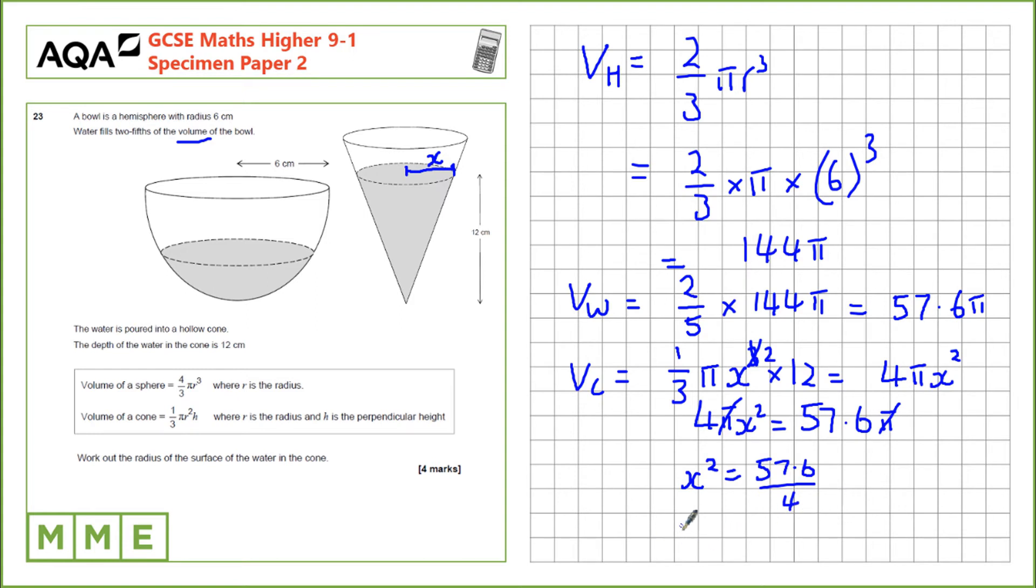Our last step is to calculate the square root of 57.6 over 4, which equals 3.79.